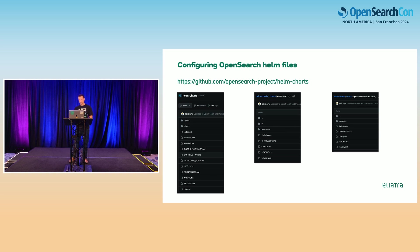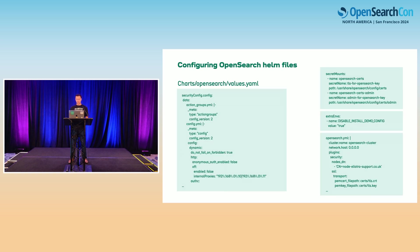When you go to the Helm repo, you'll come across two different directories: one for OpenSearch and one for OpenSearch Dashboards. In those repos you'll find the values file. The values file is very long, so we can only extract certain parts. The part on the left is where you configure the security configuration — roles, role mappings, etc. On the right-hand side, you map the secrets, which are the certificates you've created. Then you have extra environment variables and the OpenSearch YAML file, which is the one we're probably very familiar with.